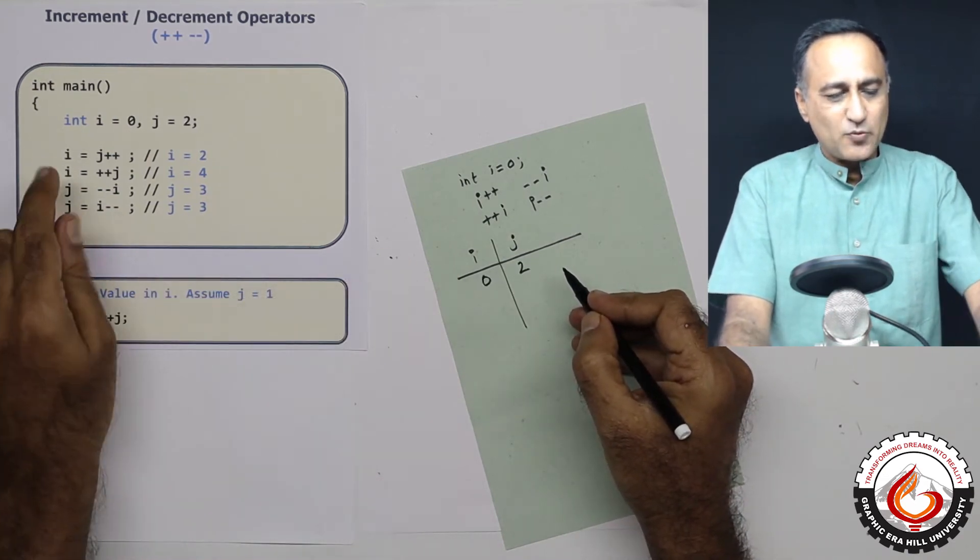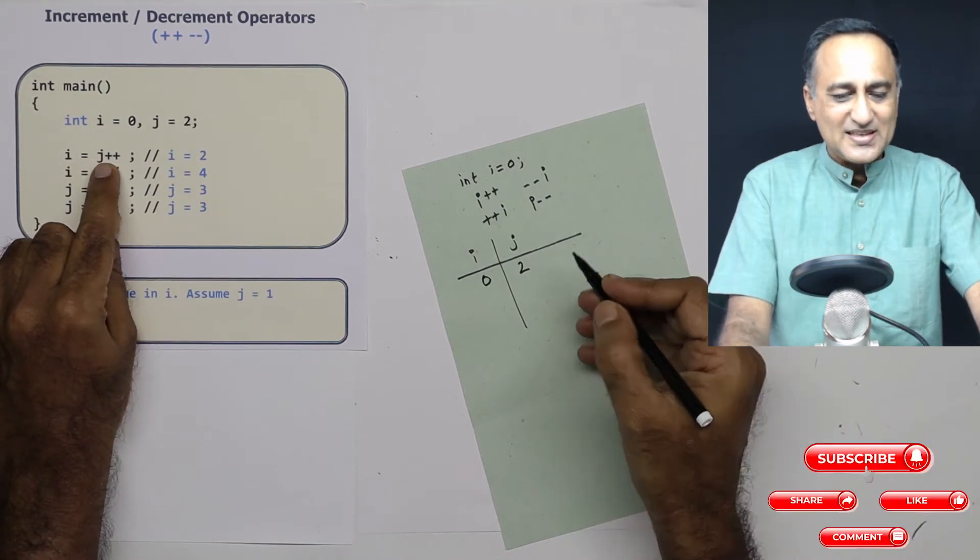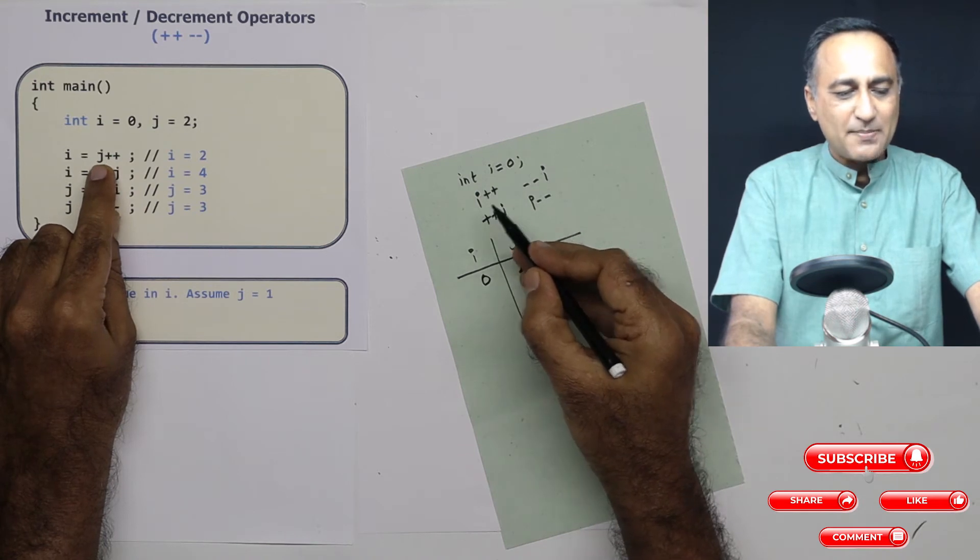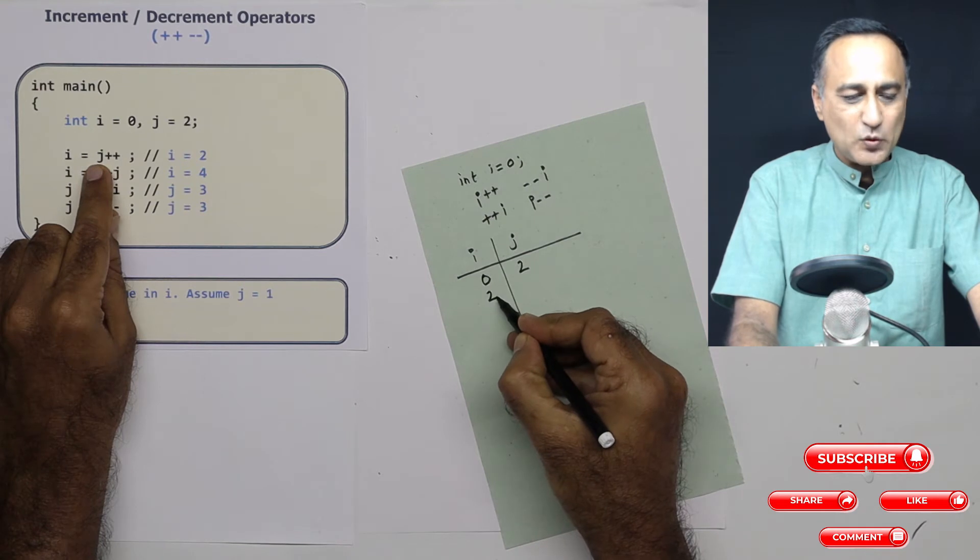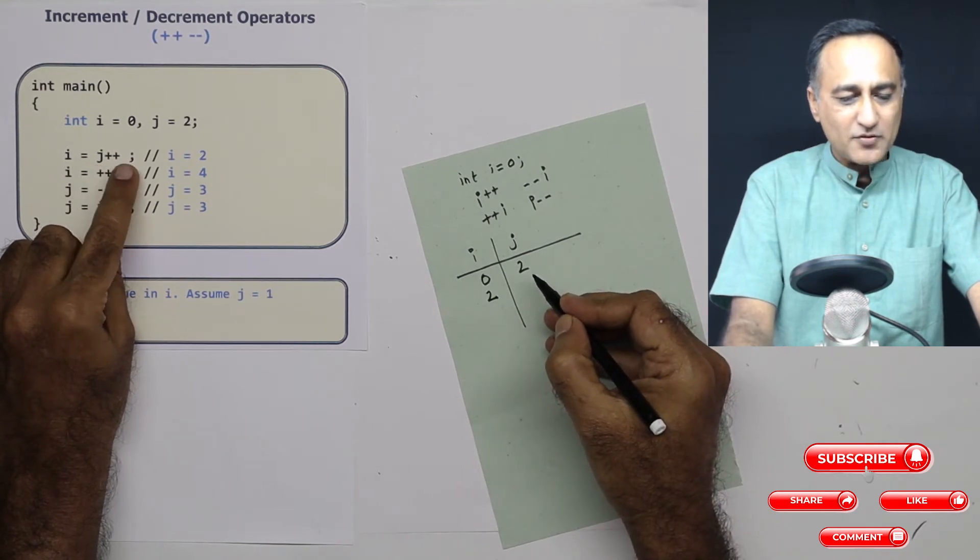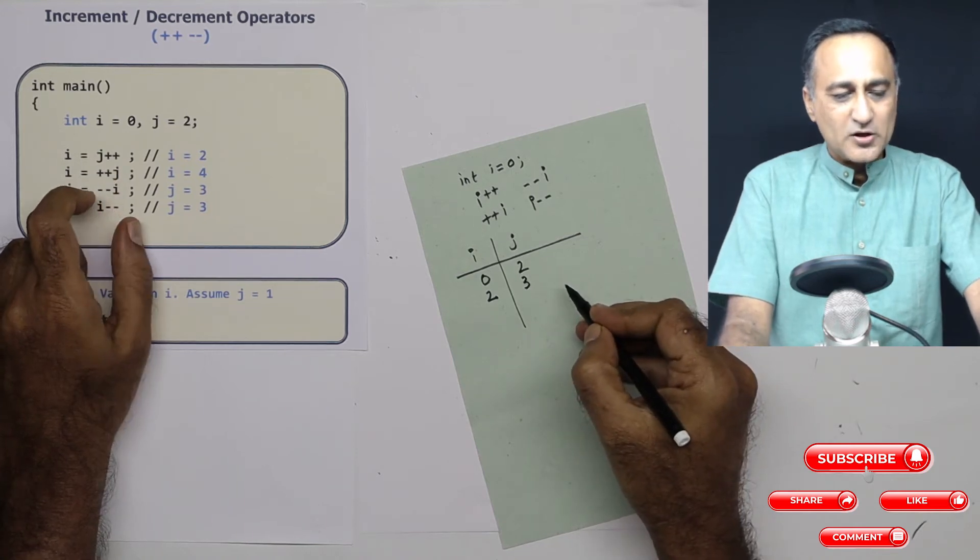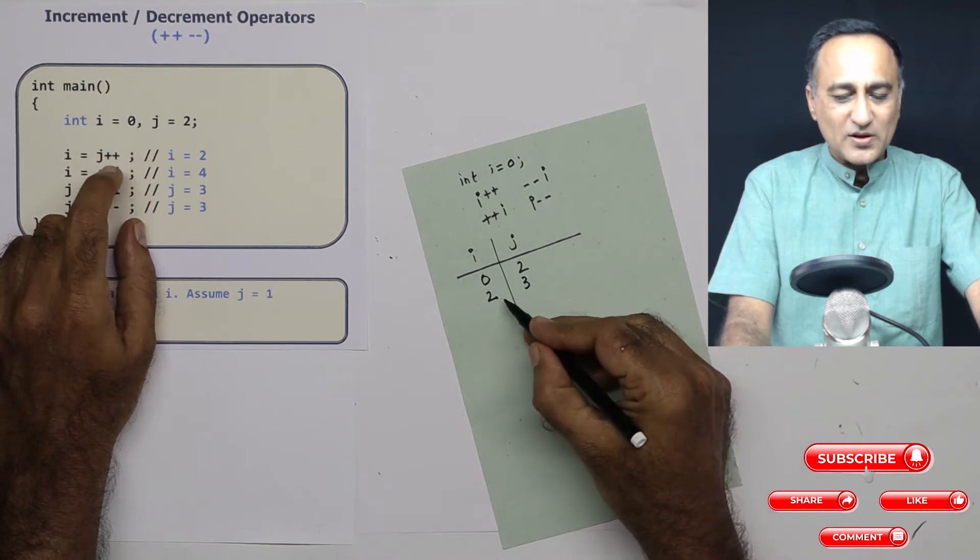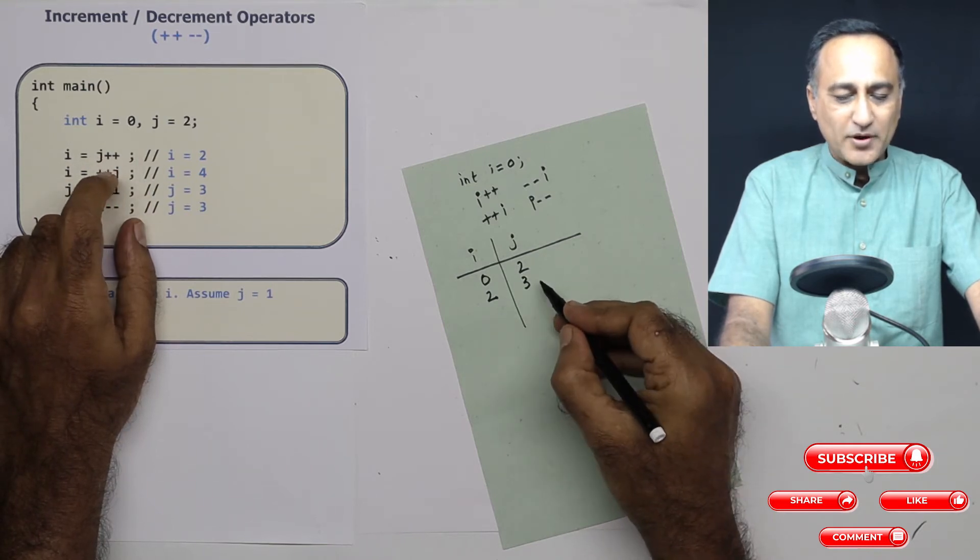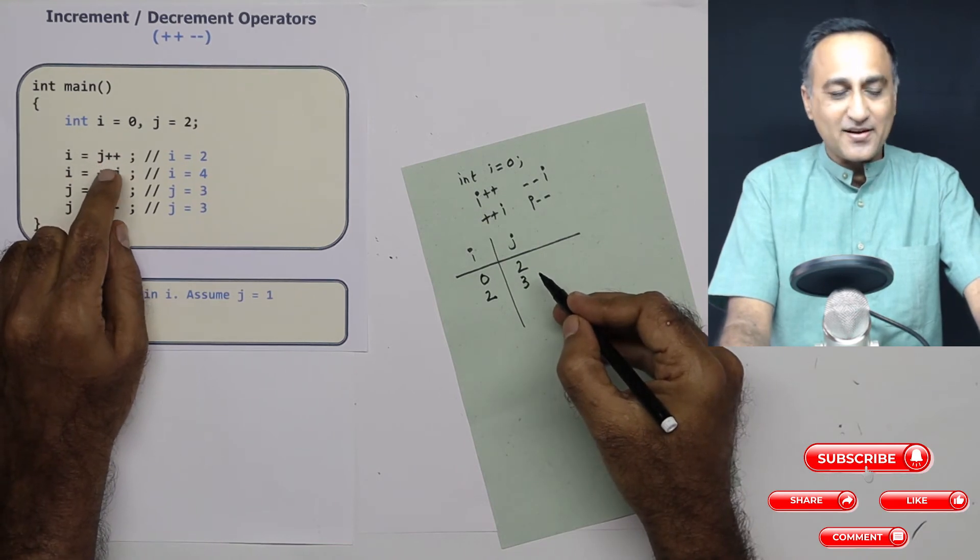In the first step, i is assigned the value of j++. Since this is a postfix increment, the increment happens afterwards, so the original value of j is assigned to i. After this semicolon, the value of j increases by one and becomes 3. When you print i after this semicolon, you'll see that i is 2. If you print j, it's 3. The old value of j is assigned because it's a postfix increment.